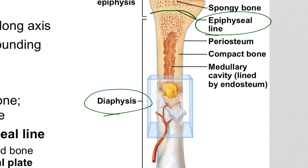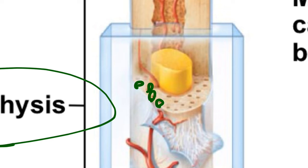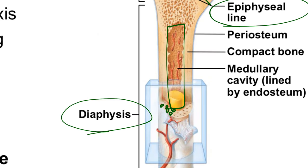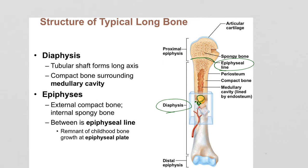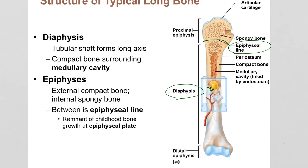Moving into the diaphysis of a long bone: the bone tissue is entirely compact bone but hollow in the center. All the tissue you see in the cutaway is compact bone with central canals. The space in the center — I shouldn't say hollow; it's filled with bone marrow, but there's no actual bone tissue there. That yellow substance is yellow bone marrow. The diaphysis is almost like a hollow piece of pipe — some thickness, hollow out the center. That hollow space is called the medullary cavity.